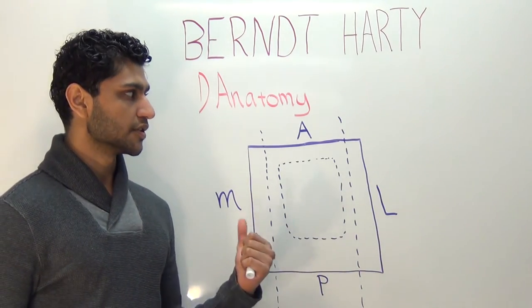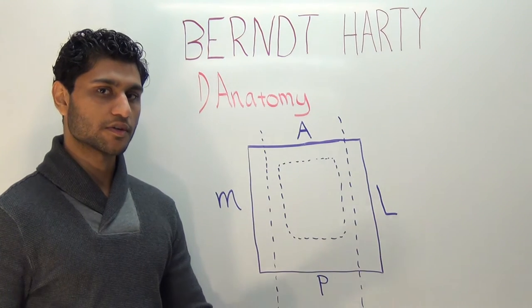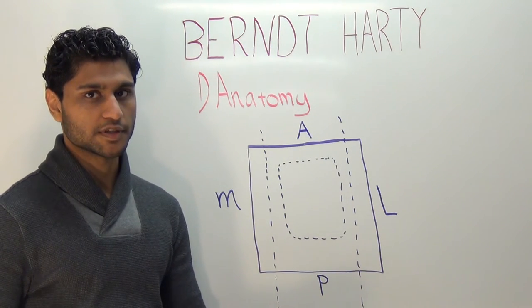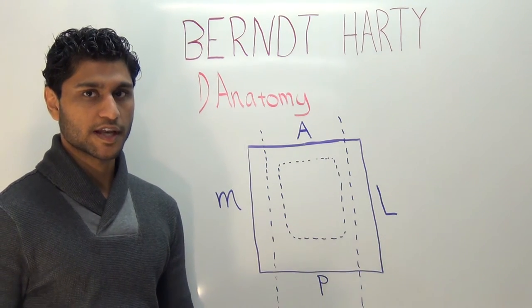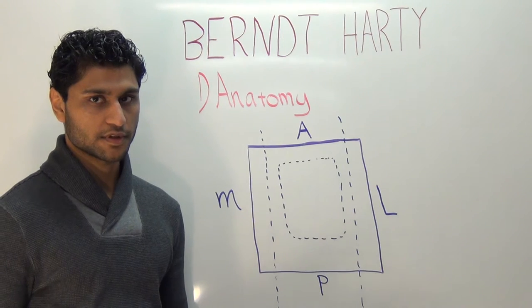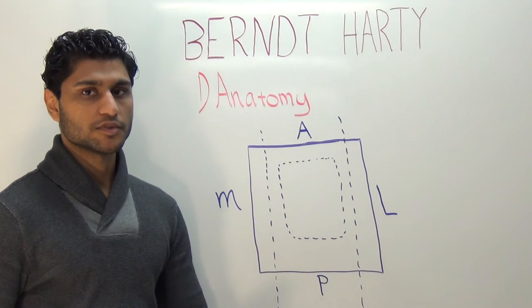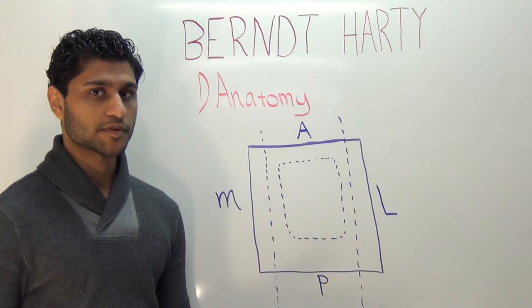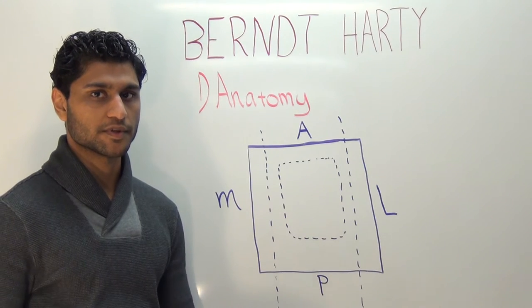Also, in terms of the tibial plafond, the cartilage in the distal aspect of the tibia is much thicker than anything found on the talar dome, which is why an OCD almost never occurs in the tibial plafond.